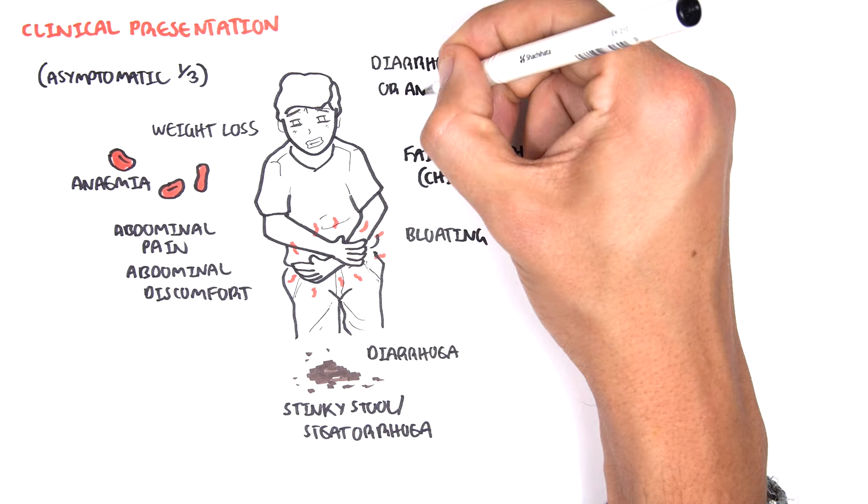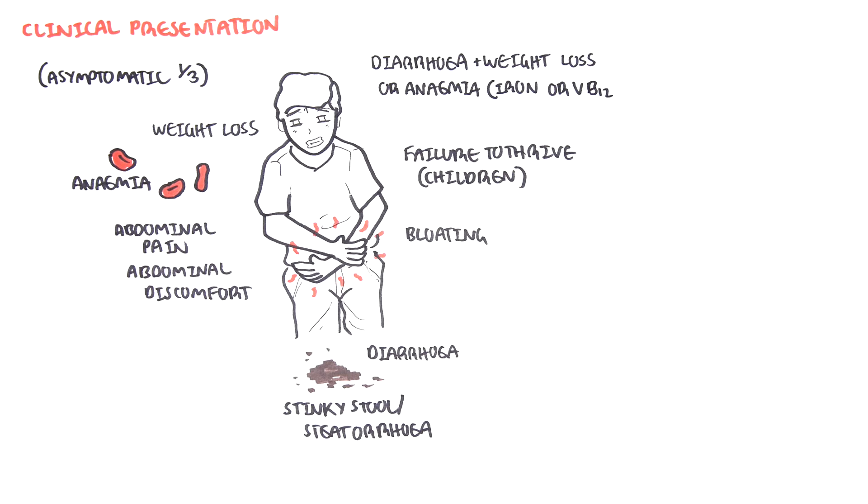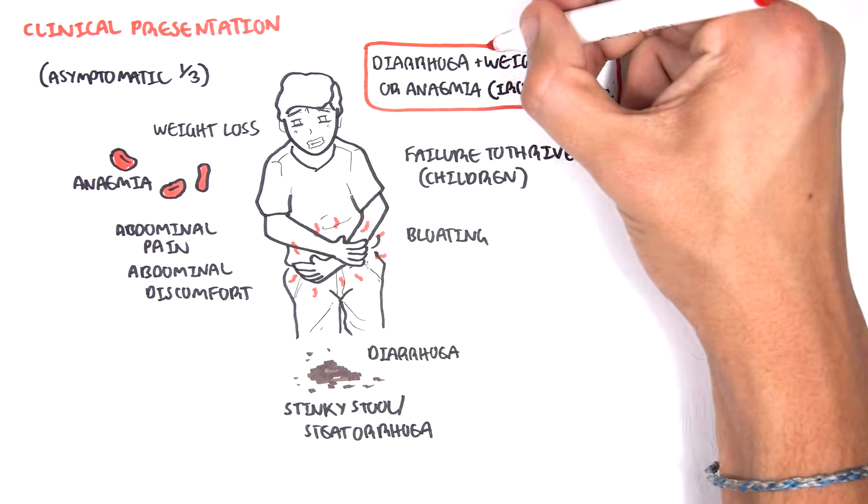It's important to remember that if someone presents with diarrhea, weight loss or anemia (iron deficiency or vitamin B12), to think of celiac disease.